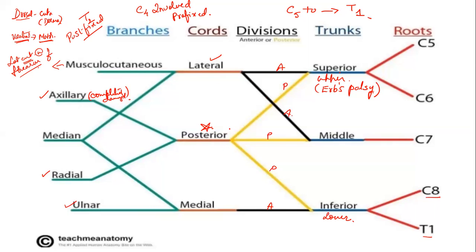They can ask how the posterior cord is formed. The posterior cord is formed by the posterior divisions of all three trunks — the superior, middle, and inferior. Since this is unique, it is the question asked most of the time. About 60–70% of the time you can expect questions on posterior cord and posterior cord branches.